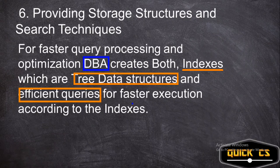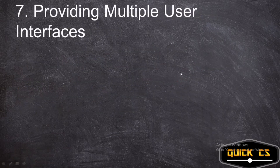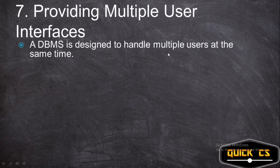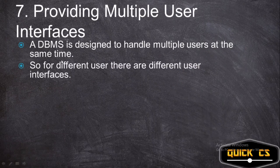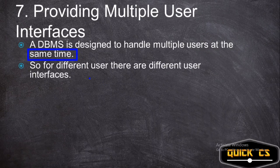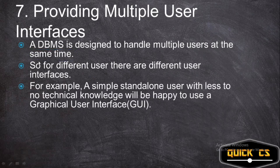Now let's look at the seventh advantage: providing multiple user interfaces. A DBMS was designed to handle multiple users because a file system cannot have multiple users accessing it at the same time. A DBMS has different types of users such as standalone users, application programmers, web users, and so on. For a simple standalone user with little technical knowledge, a GUI — graphical user interface — is appropriate.